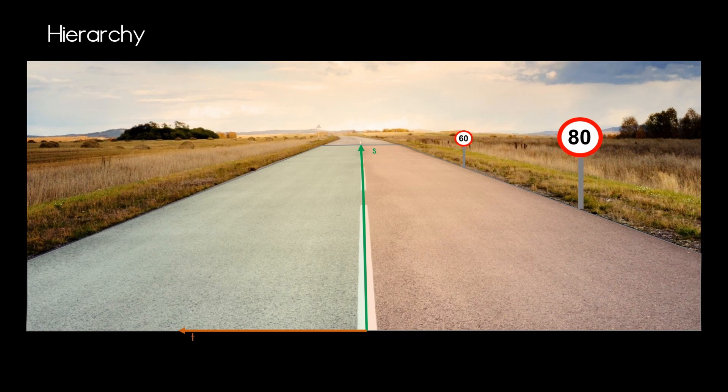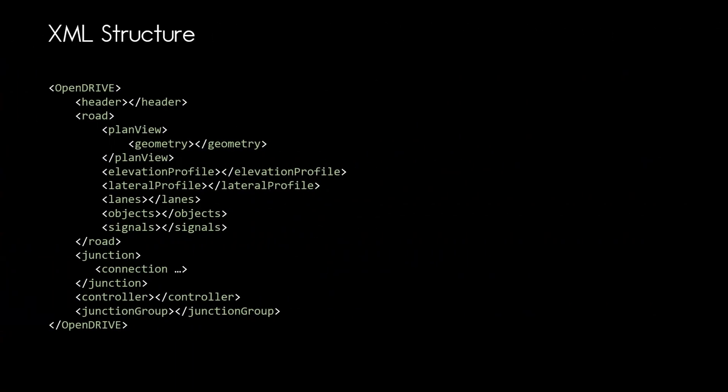Now let's check out where in the XML structure the plan view is located. This is the high-level XML structure of OpenDrive — I made a video on 'What is OpenDrive' where I explain what each element in this structure is for, and I will post a link in the video description and at the end of this video. Each road has its own reference line, which is located in the plan view element as you can see here. To define the form of the reference line, geometric primitives are used.